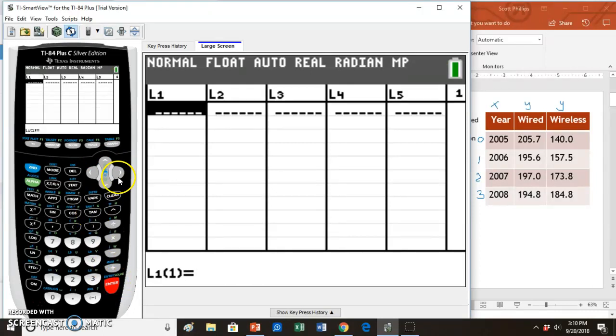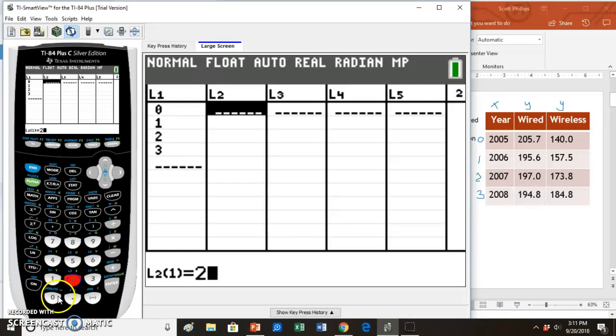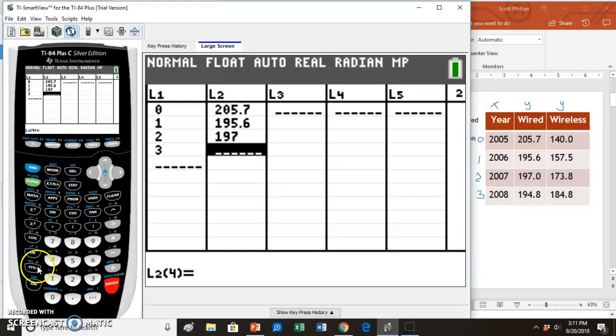So my list one is my X, and my X values here are 0, 1, 2, and 3. I type each one and hit enter afterwards. Now I'm ready to enter my Y values, and so I'll type just from the list. So the first one 205.7, 195.6, 197.0, and 194.8.